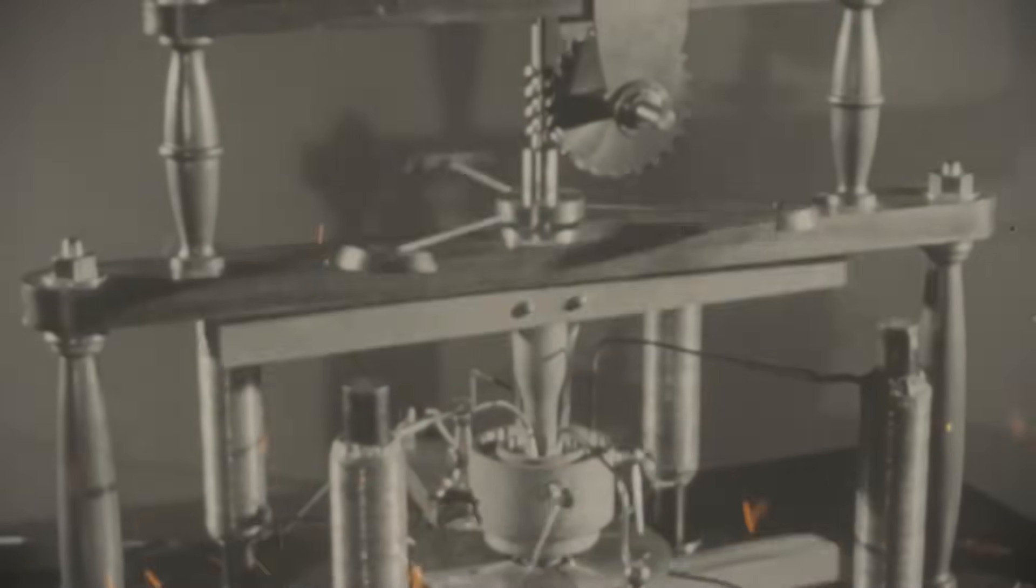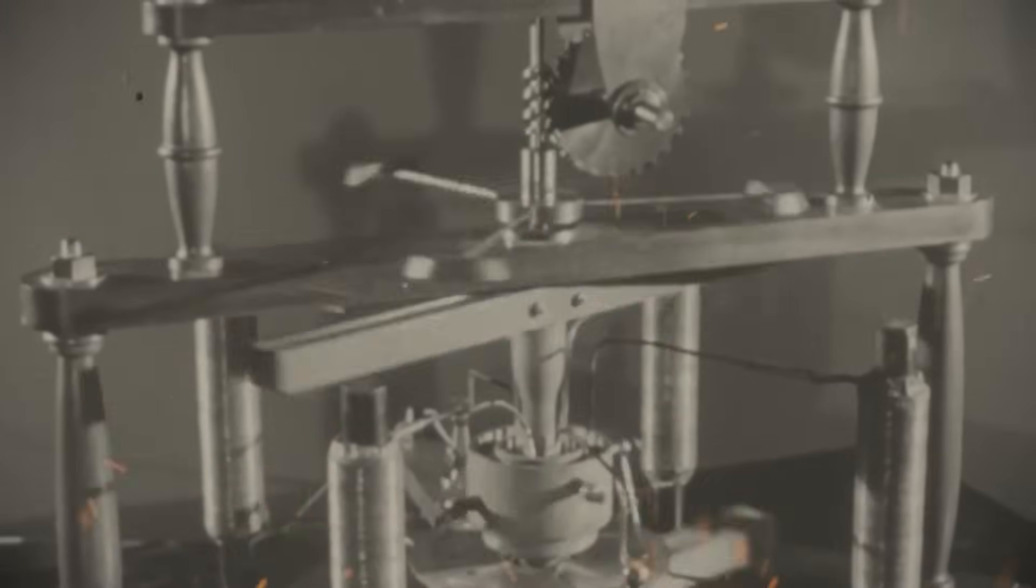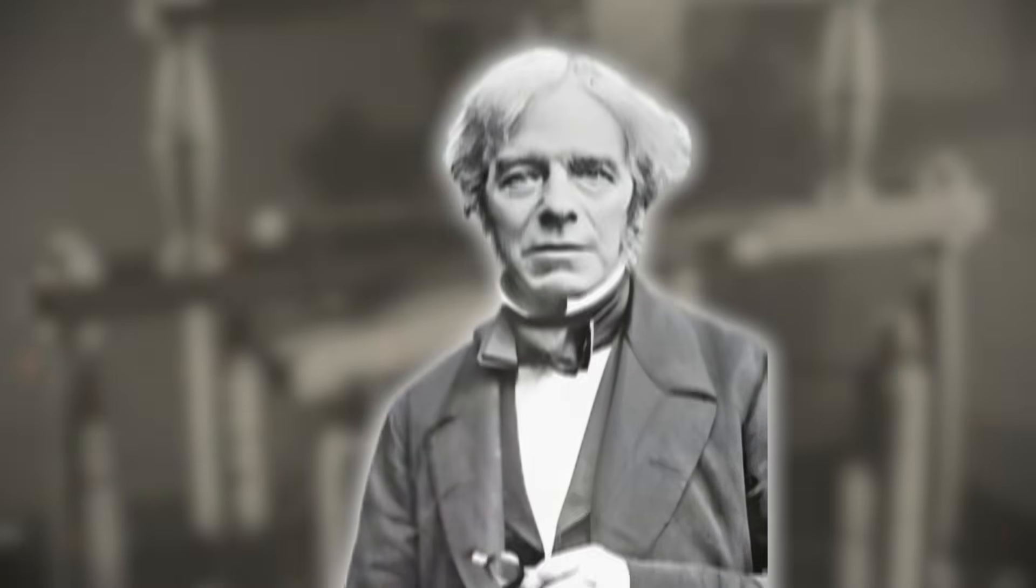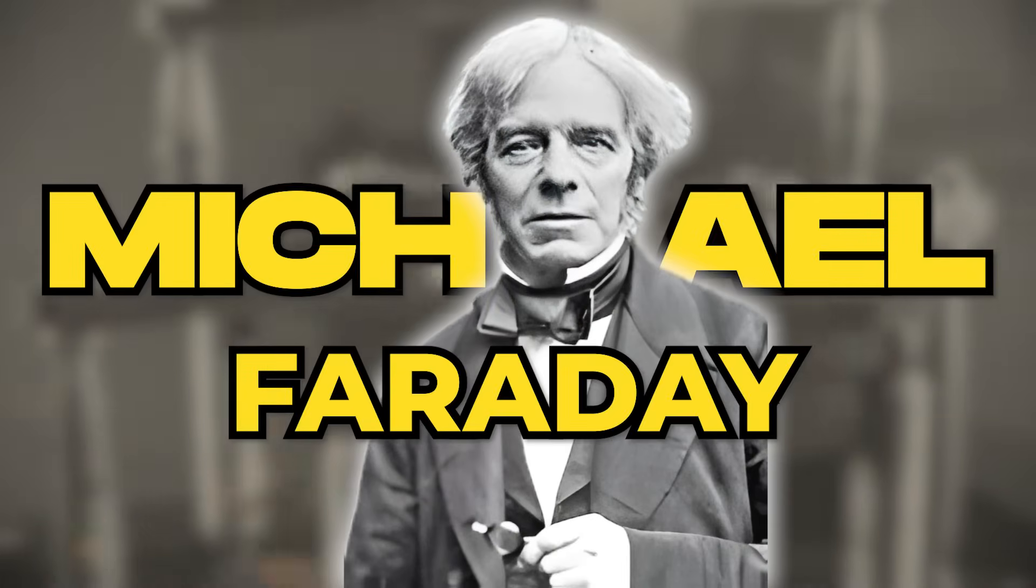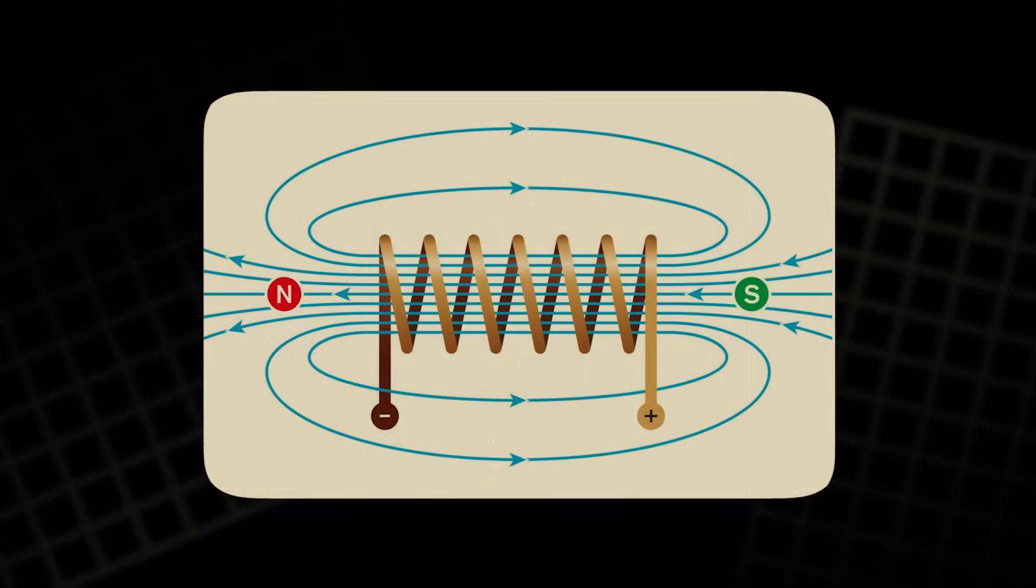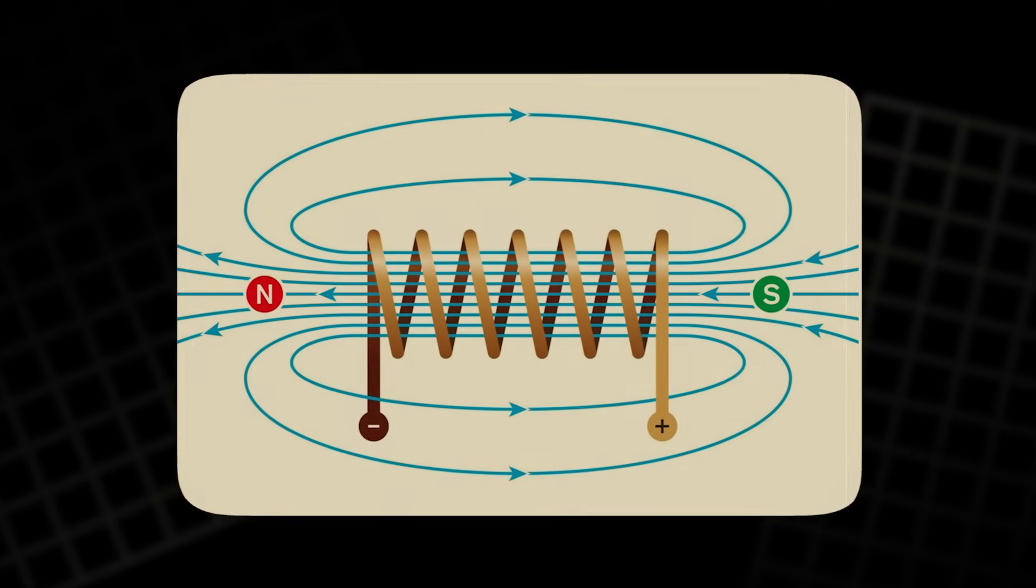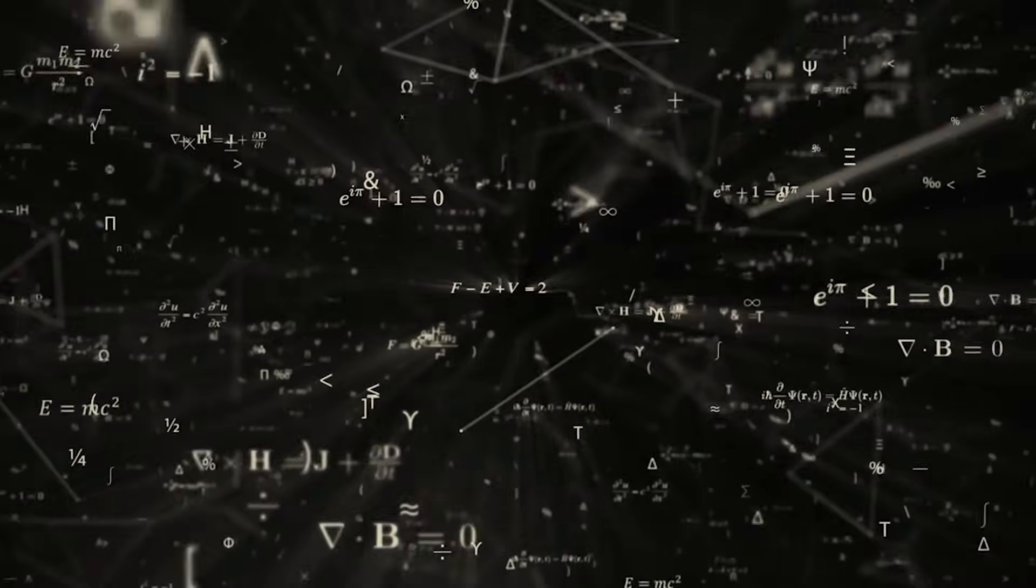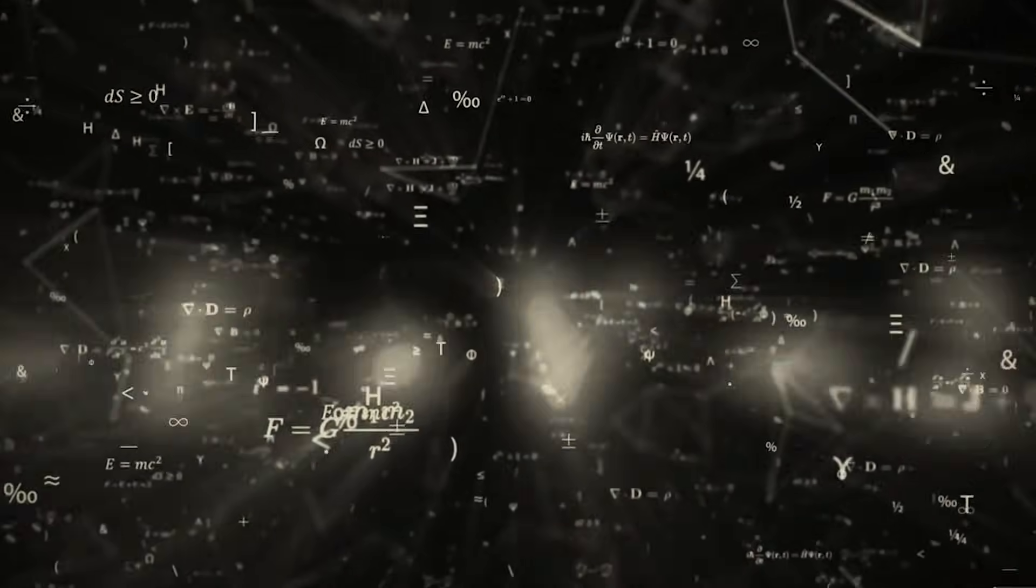The story of the Faraday Paradox begins with one of the most influential scientists of the 19th century, Michael Faraday. Known for his brilliance and dedication, Faraday was a self-taught scientist who revolutionized the understanding of electromagnetism. His journey into the world of science began in humble circumstances.